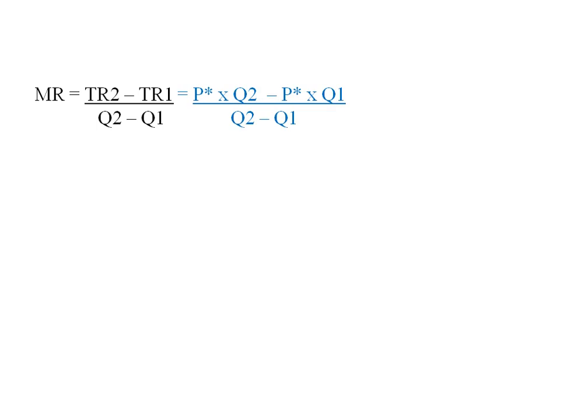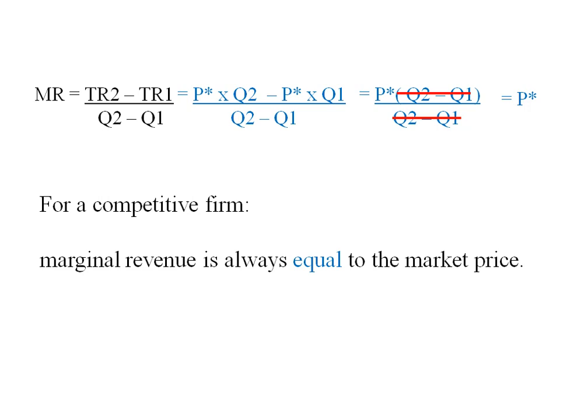Marginal revenue is the change in total revenue over the change in output. Going from 1 unit to 2 units, we substitute total revenue: P star times Q2 minus P star times Q1. Factoring out P star from the numerator, we get P star times (Q2 minus Q1) divided by (Q2 minus Q1). That cancels, and for a perfectly competitive firm, marginal revenue is always equal to the market price.